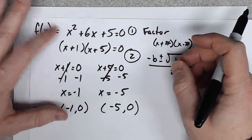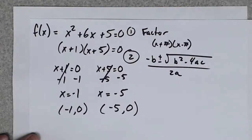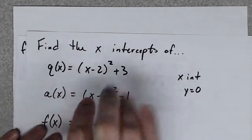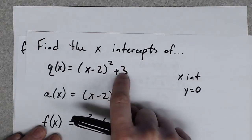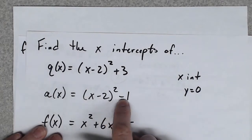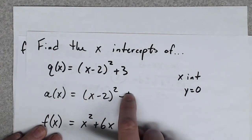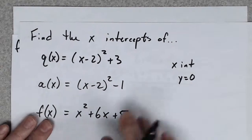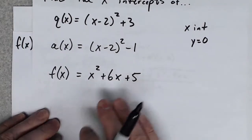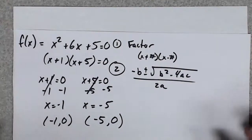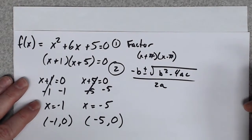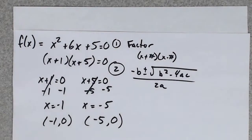To recap: if you see a quadratic in vertex form, set it equal to zero and solve — subtract the constant, take the square root with plus or minus, then isolate x. For the second vertex form example you add off the constant, take the square root, and add to both sides. For standard form, factor or use the quadratic formula. In this section every problem will factor, so use factoring — in the next sections we'll need the quadratic formula. That's how you find the x-intercepts of a quadratic.